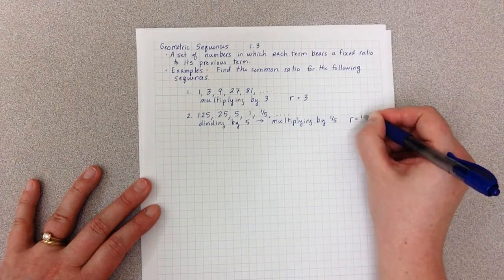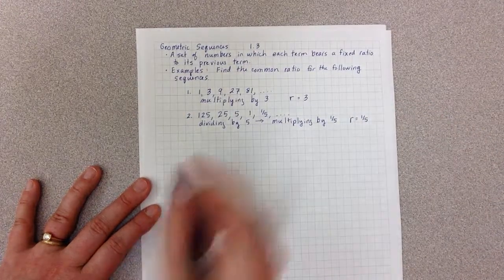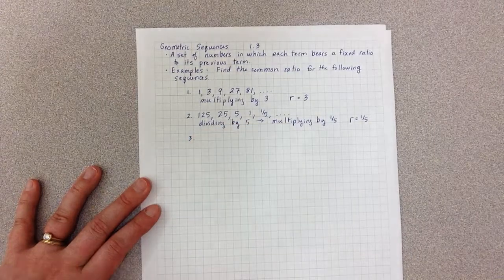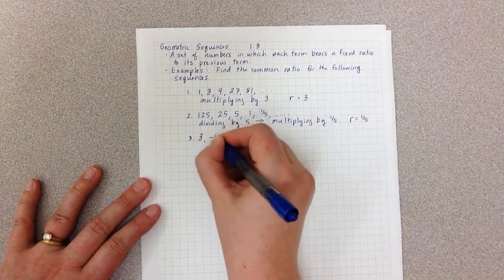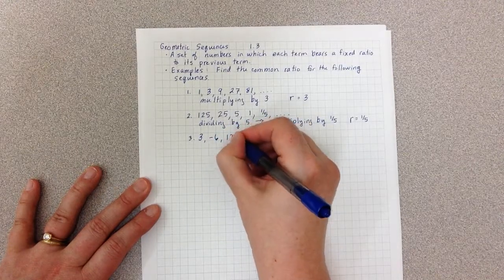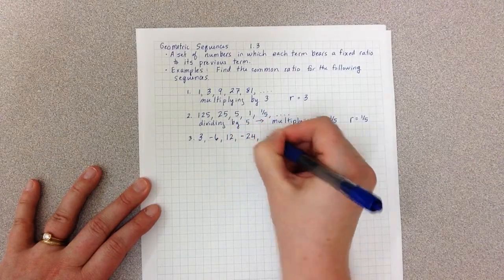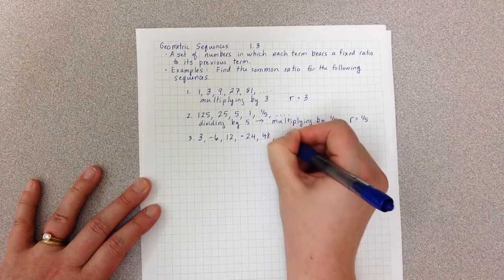So we say R equals 1 over 5 or 1/5. Our last example is the sequence 3, negative 6, 12, negative 24, 48, etc.